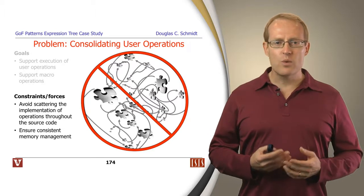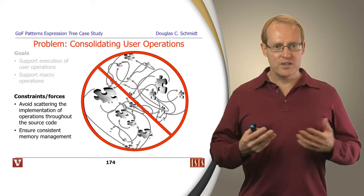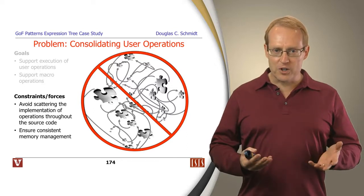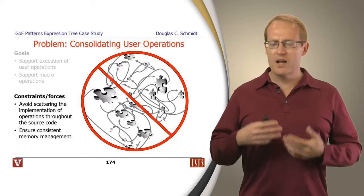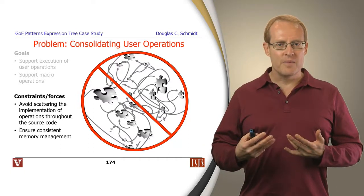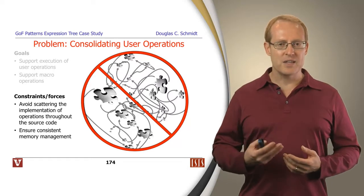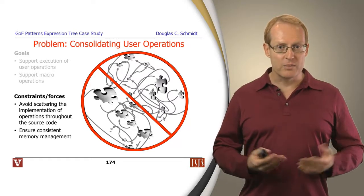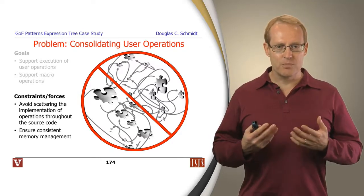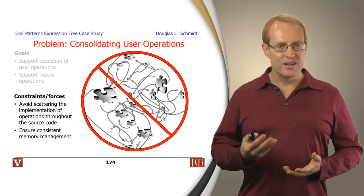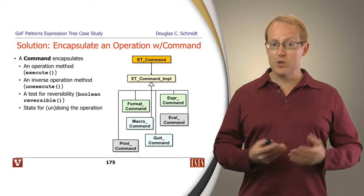Some of the constraints and forces here: we don't want to have to scatter the various implementation details, functions, methods, and data structures for these different operations all throughout the source code. It becomes unwieldy and difficult to tell at a glance what operations are provided, or where to go to extend, enhance, and debug them. We also want to ensure consistent and simple memory management, which is important in languages like C++ where you don't have automated garbage collection.